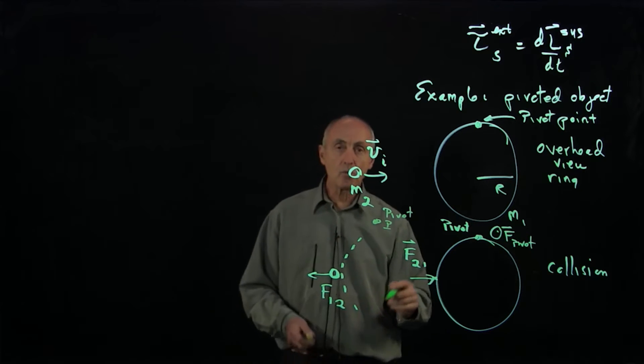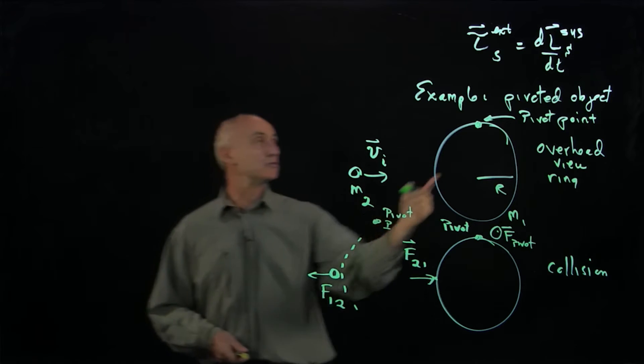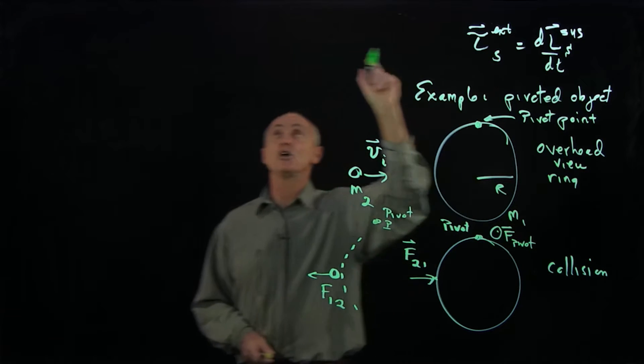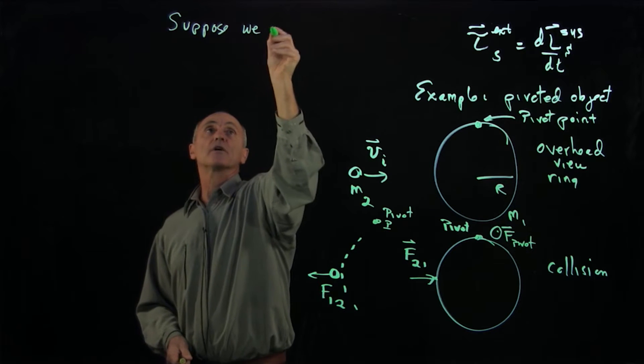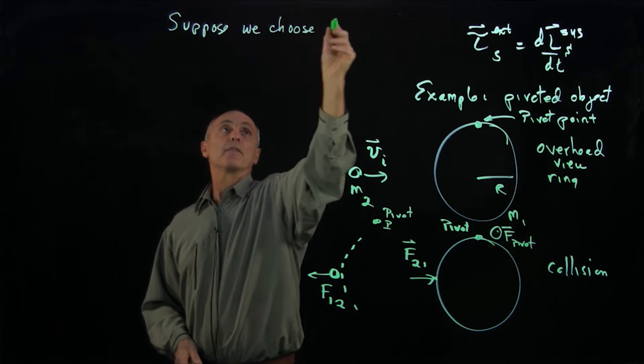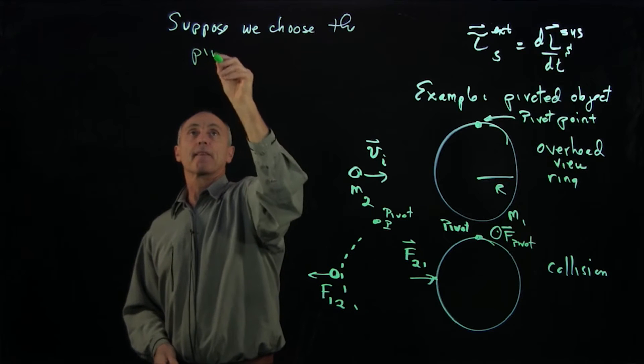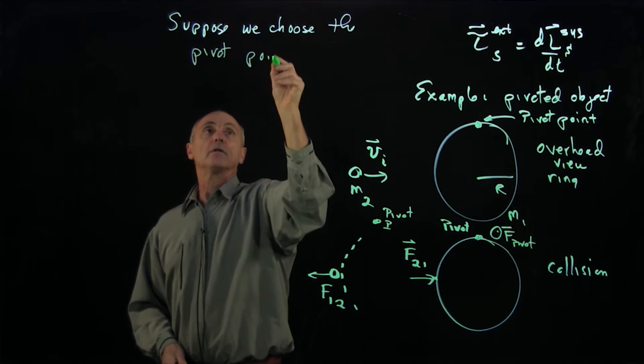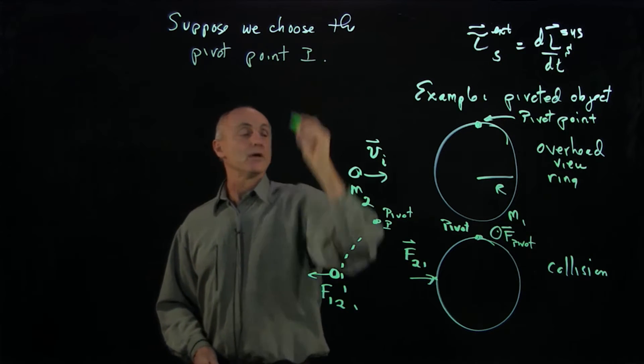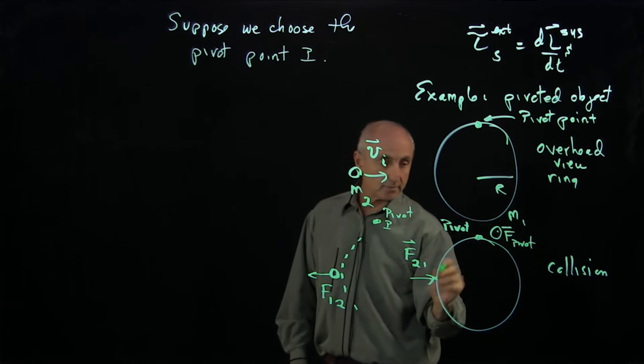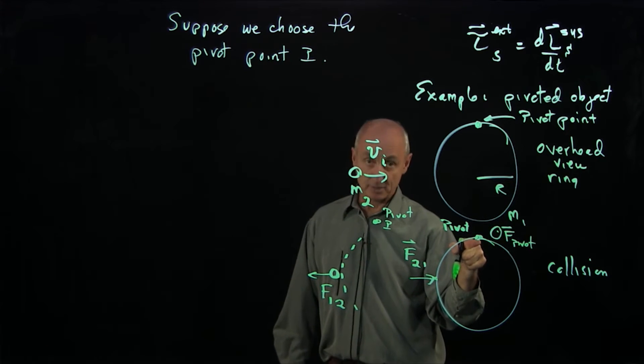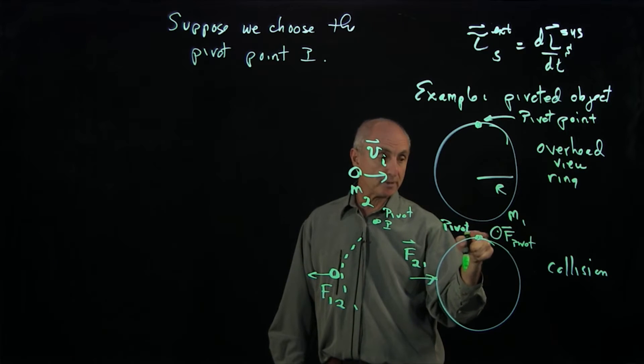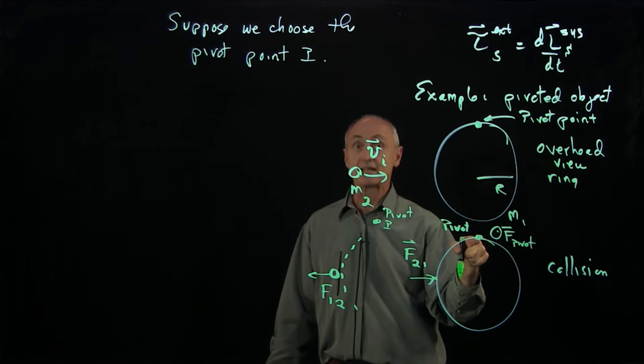And now, what point should we choose to see if there's no torque about it? Suppose we choose the pivot point. Well, clearly, the pivot force has no torque about the pivot, because the vector from the pivot point to where the pivot force is acting is zero.